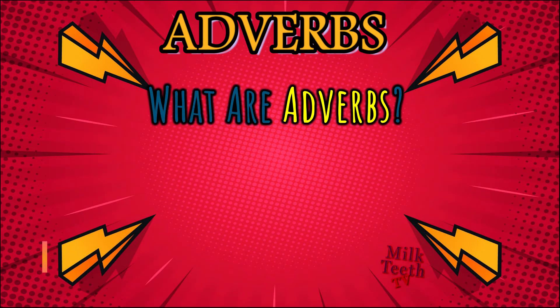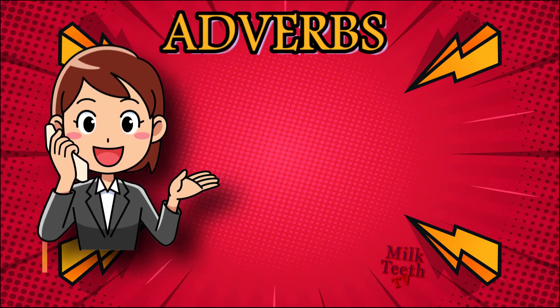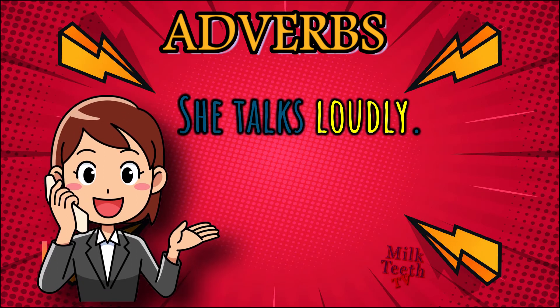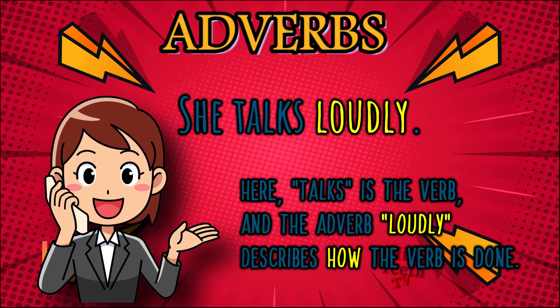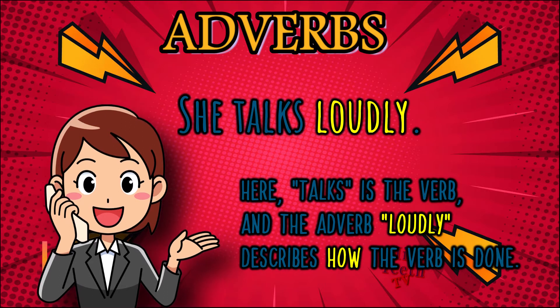What are adverbs? Adverbs are words that describe verbs. The adverb tells us how the verb is performed. The verb is the action or the doing word in the sentence. For example: she talks loudly. Here, 'talks' is the verb and the adverb 'loudly' describes how the verb is done — she talks loudly.